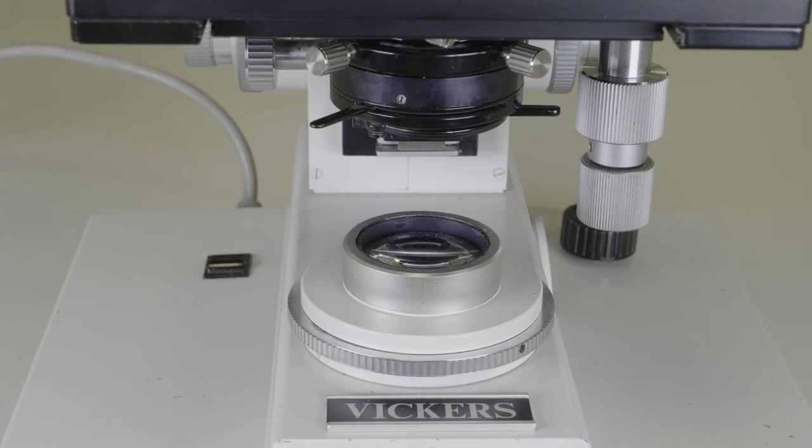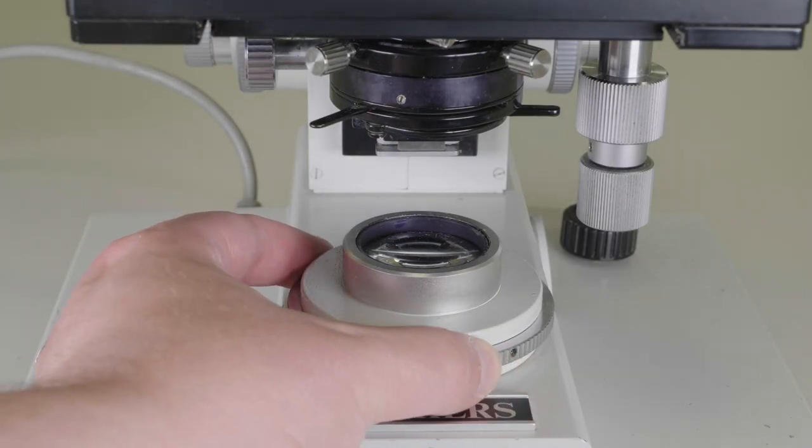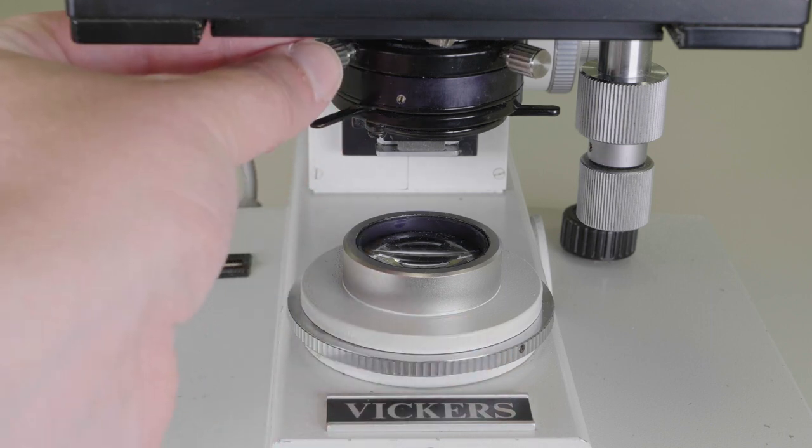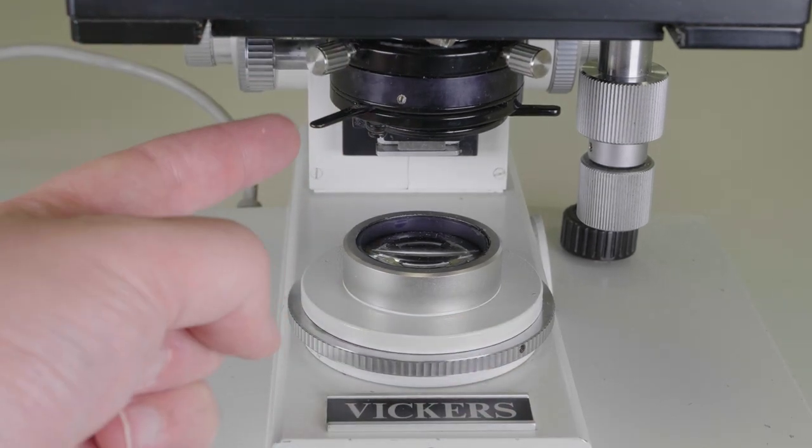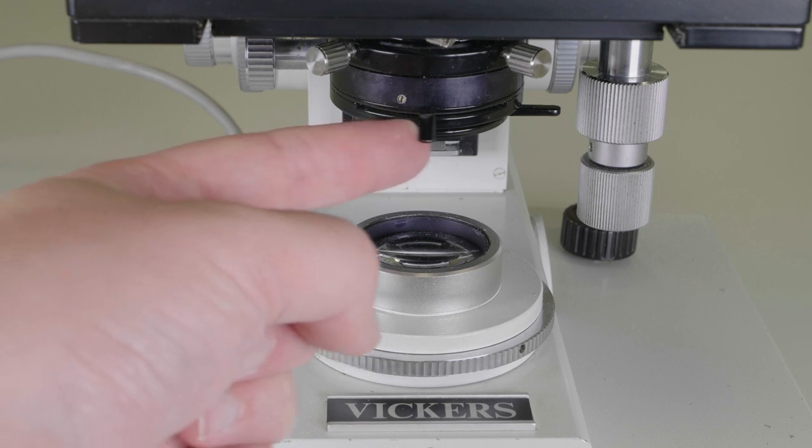The Vickers microscopes are very similar to the Olympus microscopes, the only difference being that the aperture iris is controlled by a slider instead of by a ring.